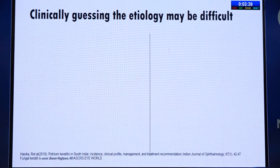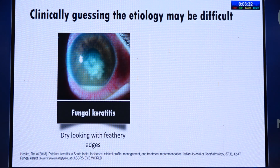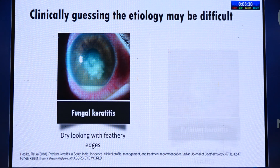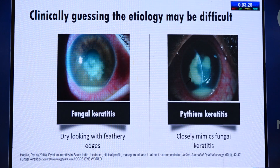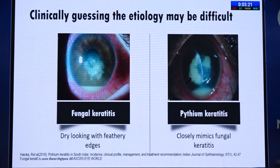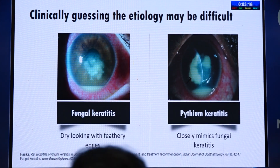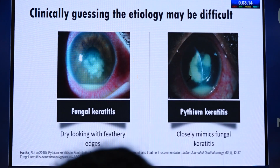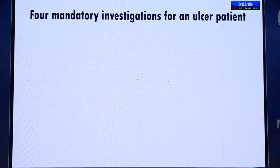Sometimes clinical guessing can be very difficult. For example, a case of fungal keratitis may have feathery margins with a dry-looking ulcer, and pythium keratitis closely mimics this but requires a totally different treatment. Even in the best hands it is very difficult to just clinically pinpoint the etiological agent causing the ulcer. Therefore, mandatory investigations are required for every ulcer patient.